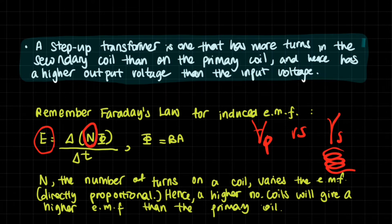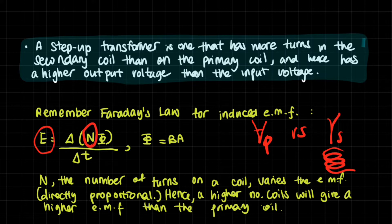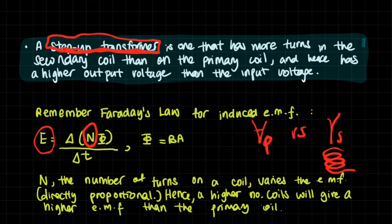If the number of secondary turns NS is bigger than NP, then the EMF — the alternating voltage in the secondary coil — will be larger than in the primary coil. From the beginning to the end of the transformer, we are making the voltage bigger: this is a step-up transformer. You also need to understand that a step-up transformer steps up the voltage, not the current or the power.